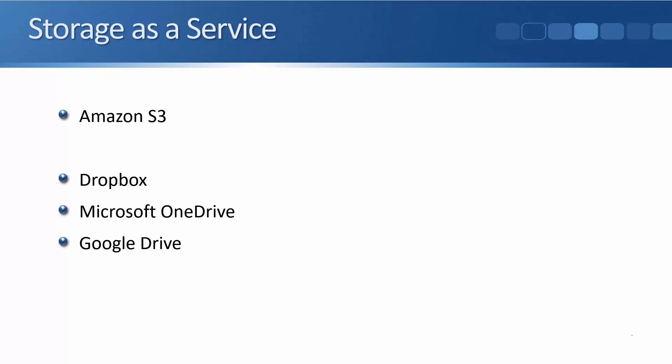The reason these examples are not included in the NIST's standard definition is that they could all fall under the other models already covered in that definition. For instance, storage as a service, Dropbox, Microsoft OneDrive, and Google Drive could be classed as software as a service. Desktop as a service and disaster recovery as a service are really types of infrastructure as a service. So it's not that anything is missing from the NIST definition — it gives a complete definition of all cloud services. Providers simply also use the XaaS term because it can help with their marketing.